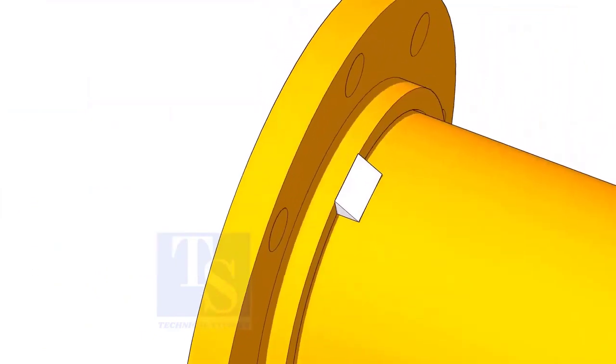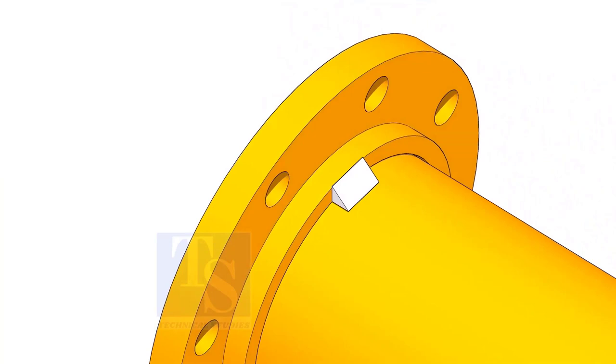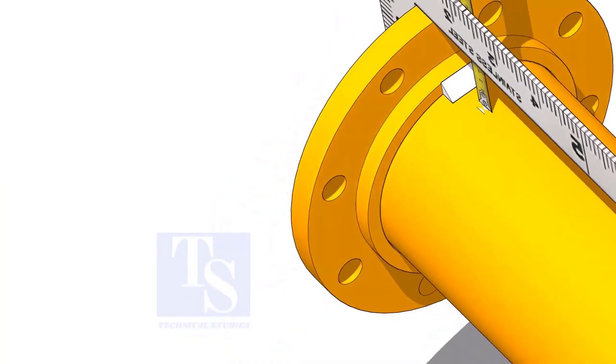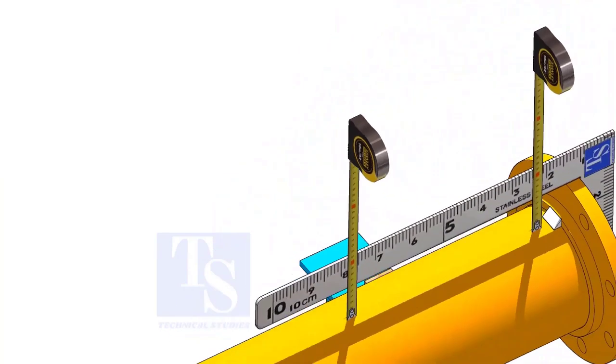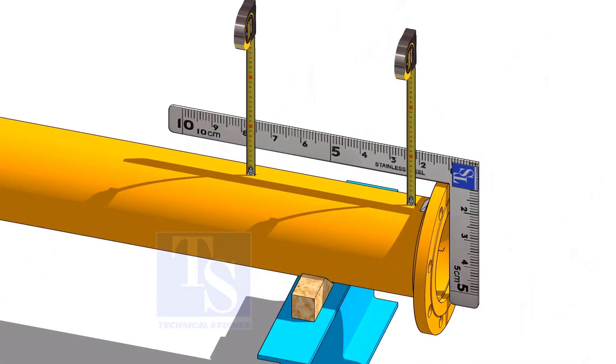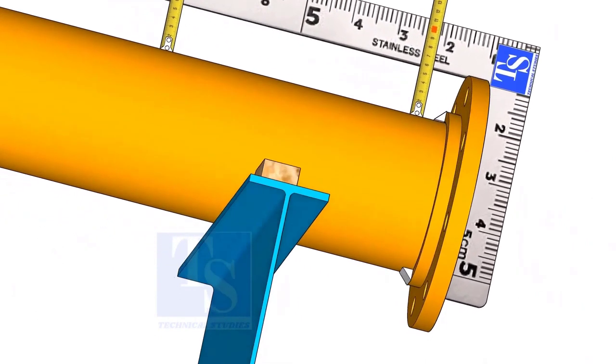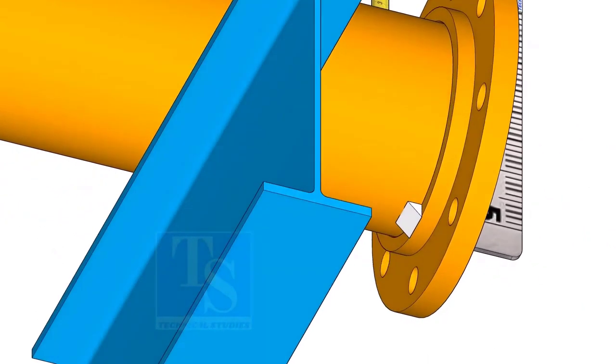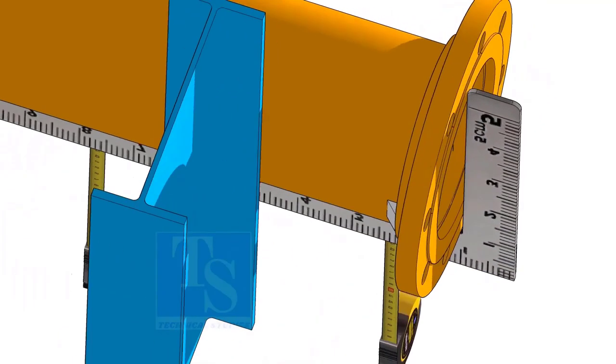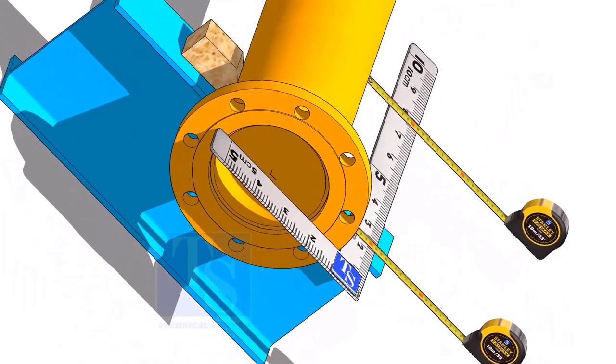Tack weld on the top side of the pipe. Correct the squareness and tack weld at the bottom side. Square the flange and tack weld on both sides.